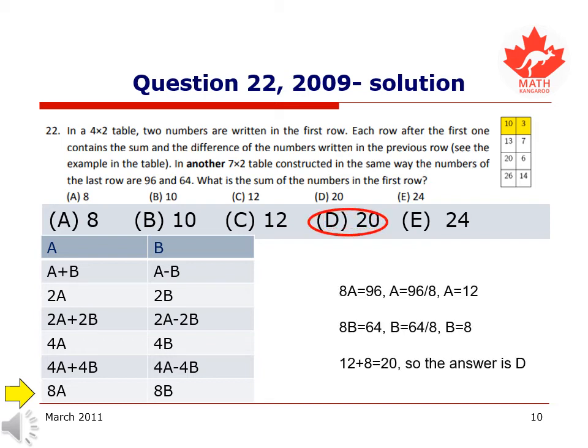Now we're going to look and try to solve for A and B. We find that A is equal to 12 and B is equal to 8. So the sum of these is 20. Therefore, the answer of our question is D.